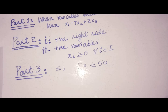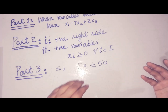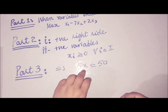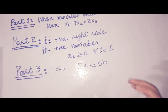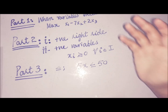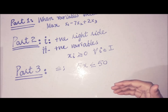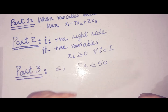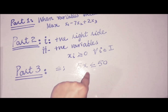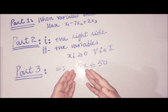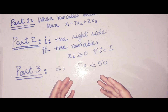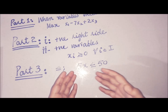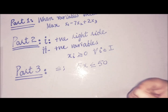In the constraint 5x ≤ 50, the right-hand side represents the limit on the availability of resources, and the left-hand side represents the usage of those limited resources by the variables. The value of x could be 10 to make it an equality, but for an optimal solution it will typically be less than 10, creating a gap between available resources and used resources.